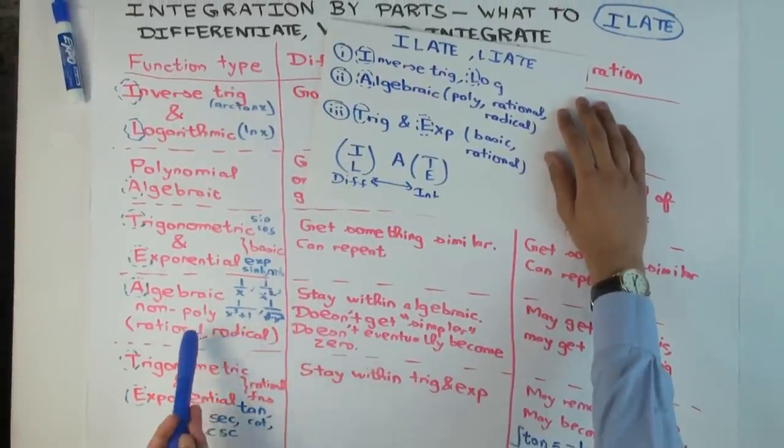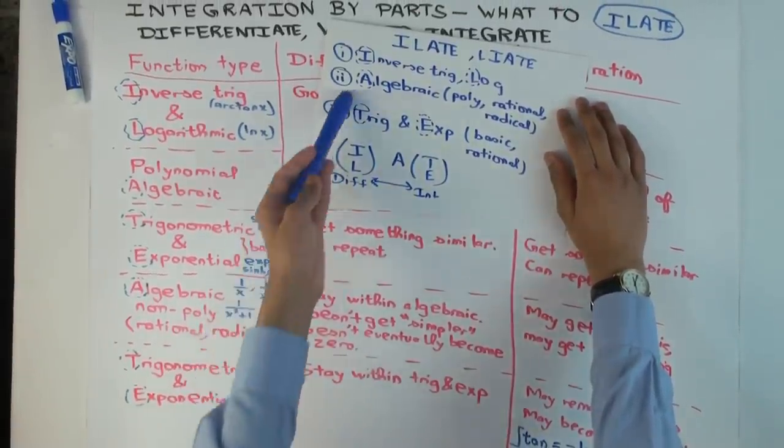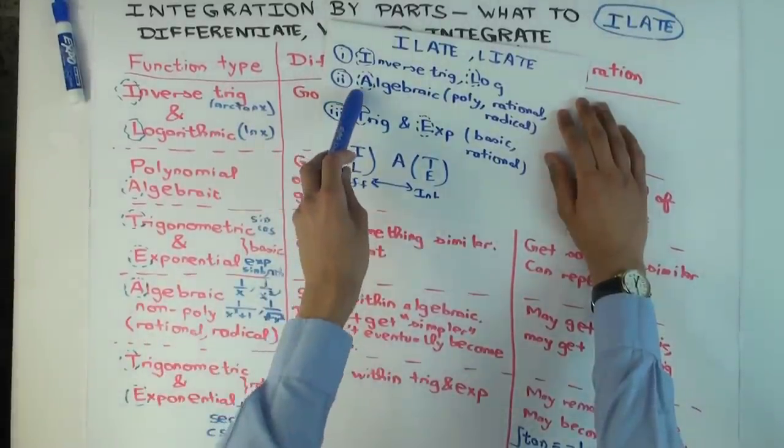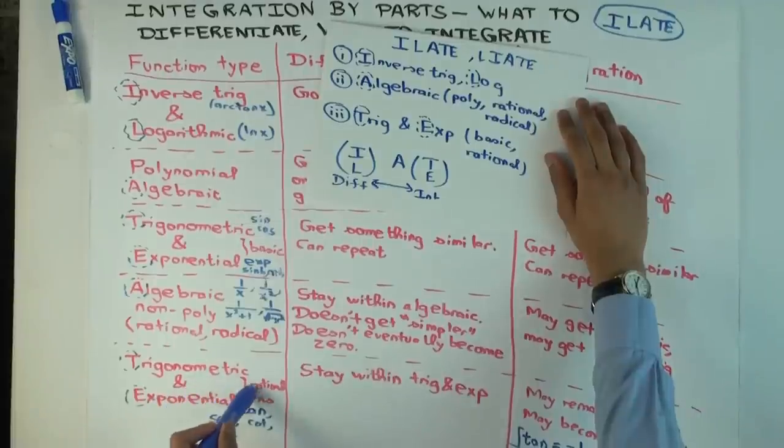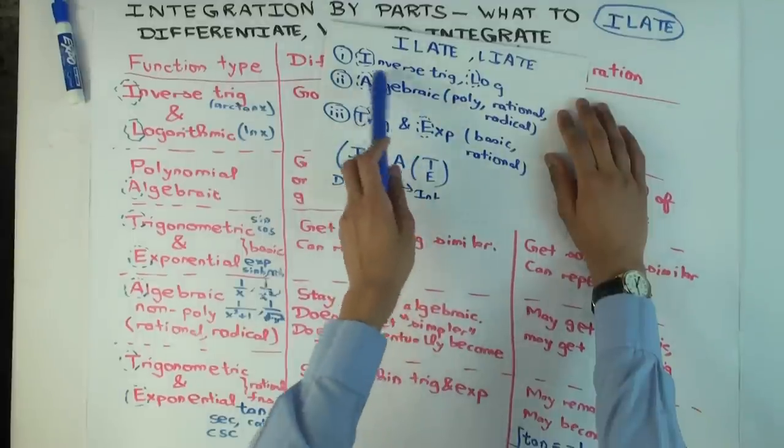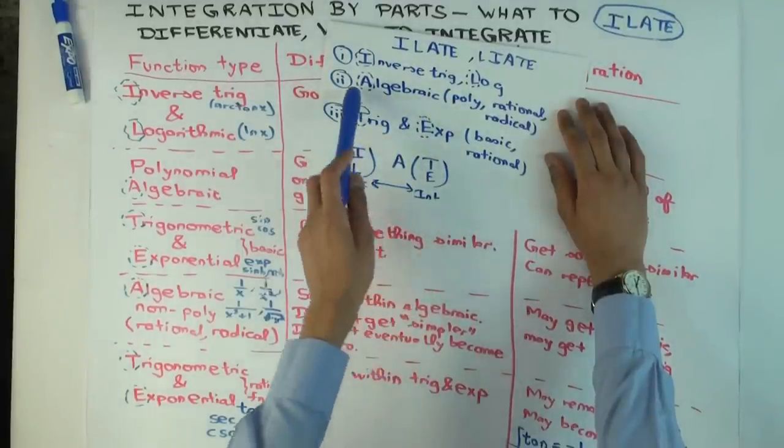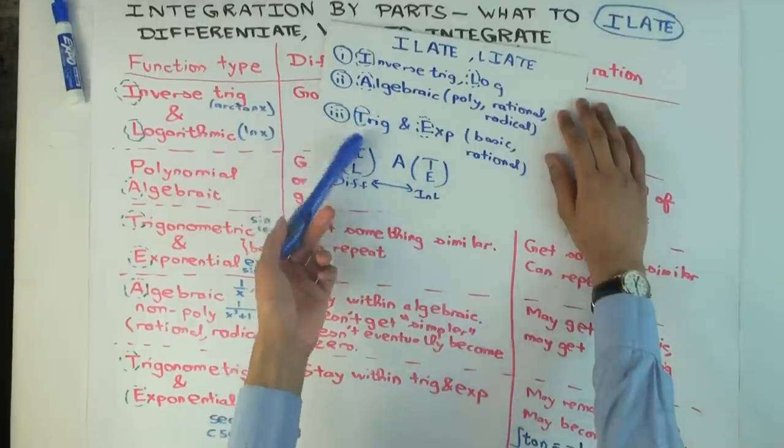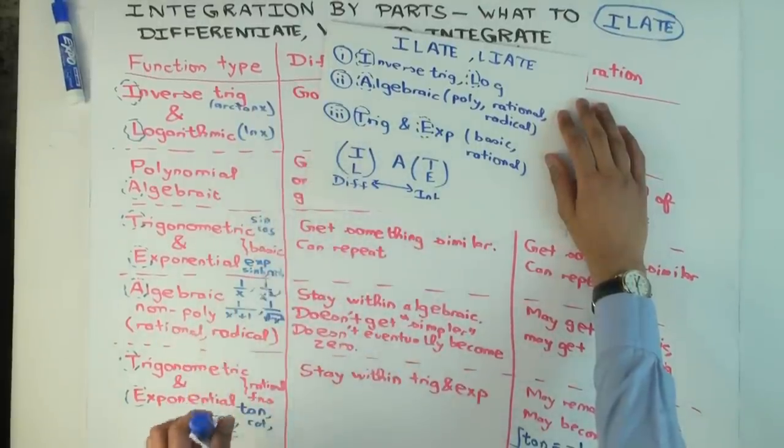then it's a little less clear what to do. Generally speaking, you should still follow the same precedence rule. So even the non-polynomial algebraic ones come in the middle, and the non-polynomial, that is these rational function types trigonometric, come here. But it may often happen that you are ultimately not able to do the problem using integration by parts. You get stuck somewhere. So that could happen.